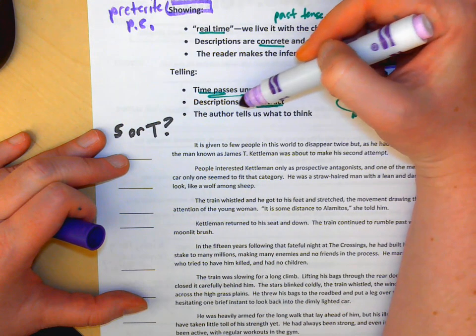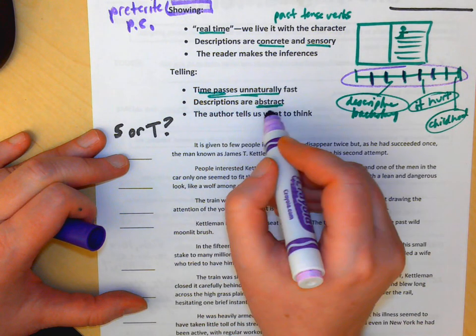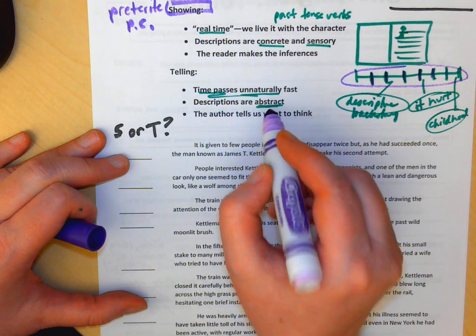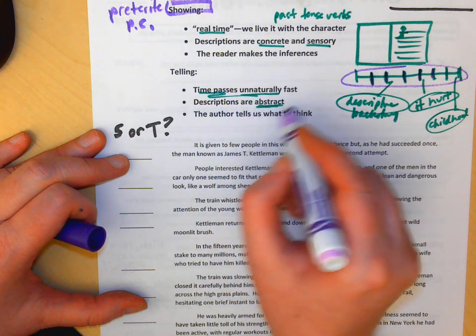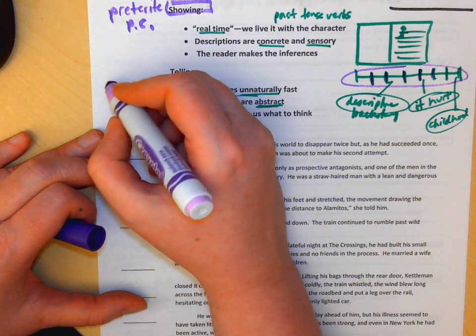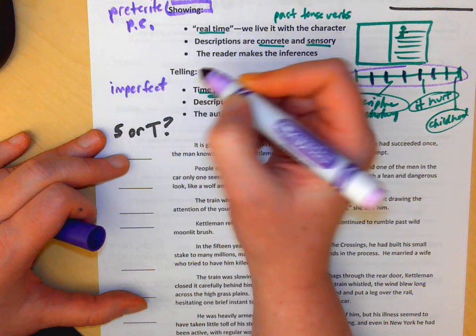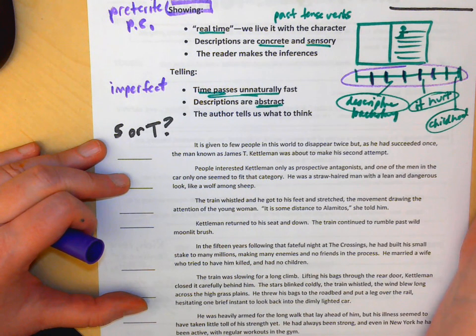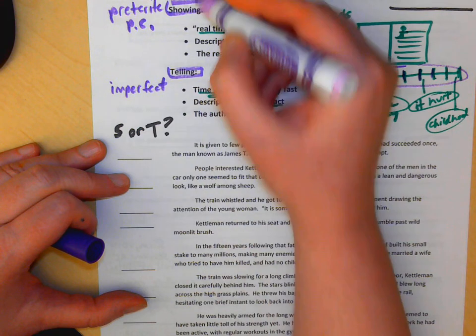But guys, when you switch into descriptive mode and you're talking about their backstory, their childhood, you want to say something like it was cold, he was wearing a shirt, he felt sad, or the author is telling us what to think, they shift into a verb tense called the imperfect. Imperfecto in Spanish and imparfait in French. Did you realize that that's what they're doing, my French and Spanish students? Different verb tenses for showing or telling.